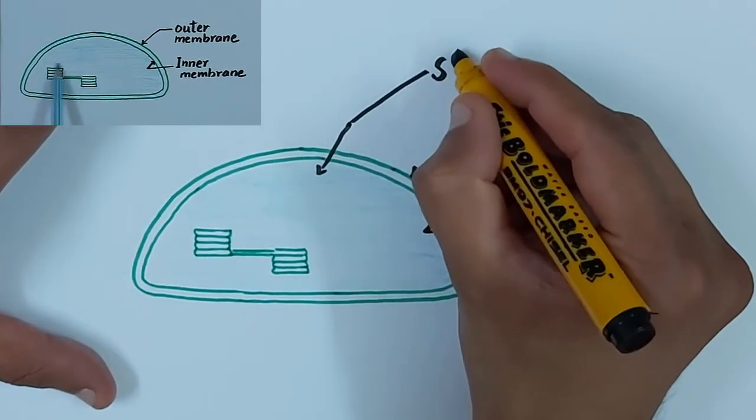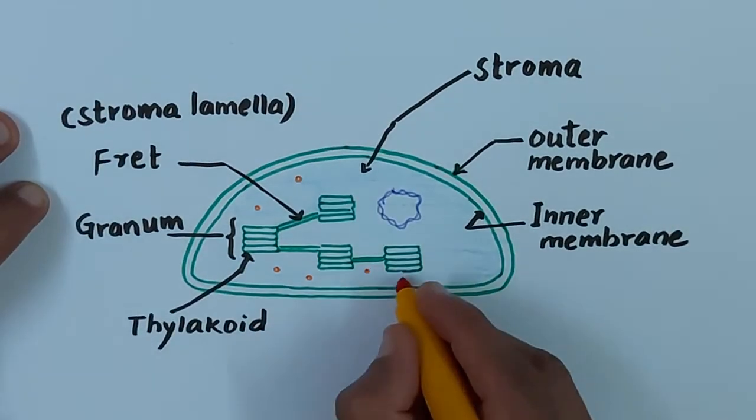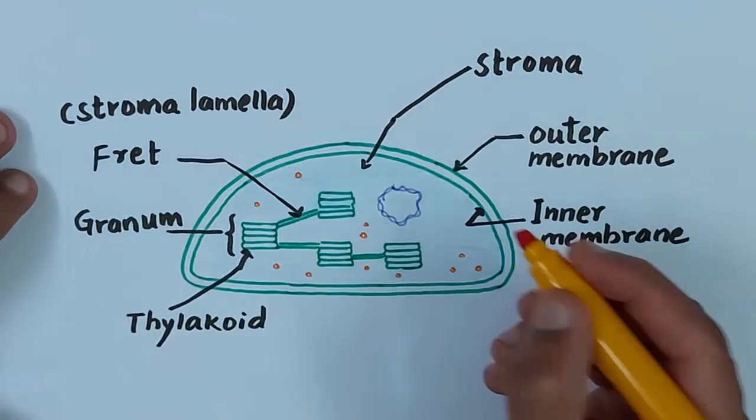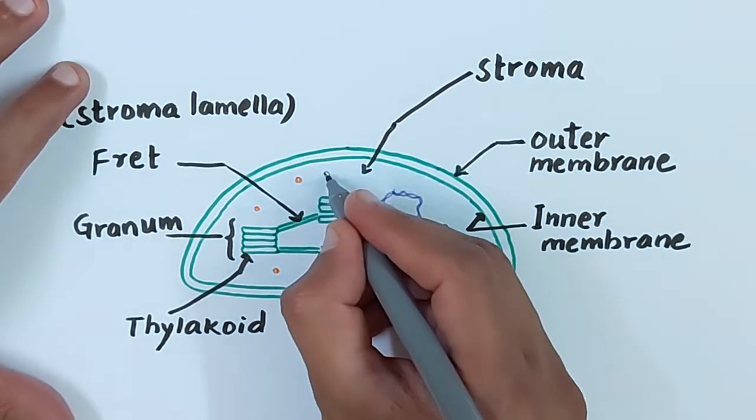The fluid present in the chloroplast is known as stroma. Stroma contains ribosomes, circular DNA, starch granules, and lipid droplets.